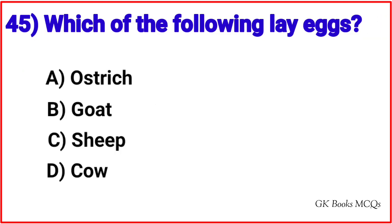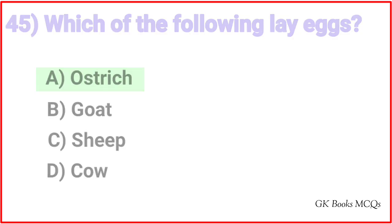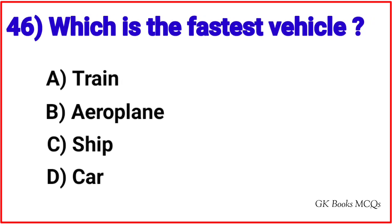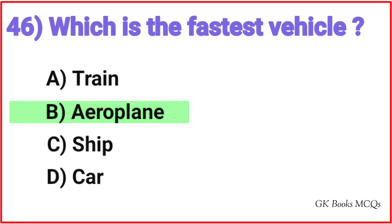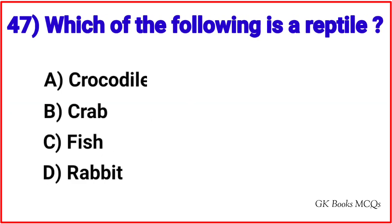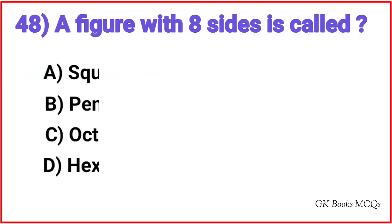Question 45: Which of the following lays eggs? Correct answer is option A, Ostrich. Question 46: Which is the fastest vehicle? Correct answer is option B, Aeroplane. Question 47: Which of the following is a reptile? Correct answer is option A, Crocodile.